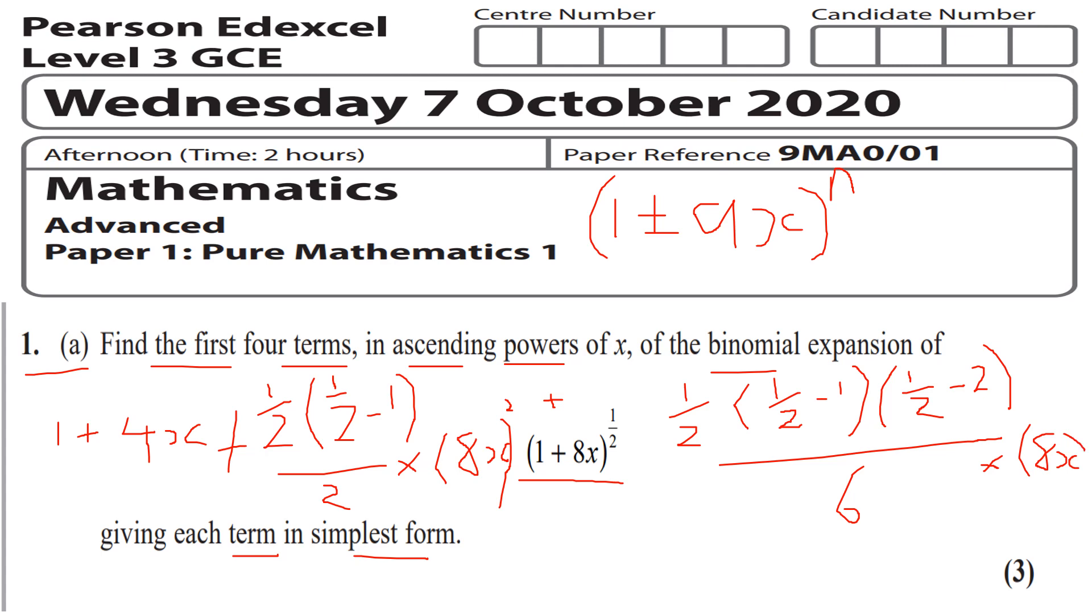I'll try to test myself today because I haven't got my Casio next to me. So here we're gonna have a half minus 1 is gonna be minus a half, times a half is gonna be minus a quarter over 2, so that'll be minus an eighth. So minus an eighth times 64x² will be minus 8x². So we're gonna have 1 + 4x - 8x².